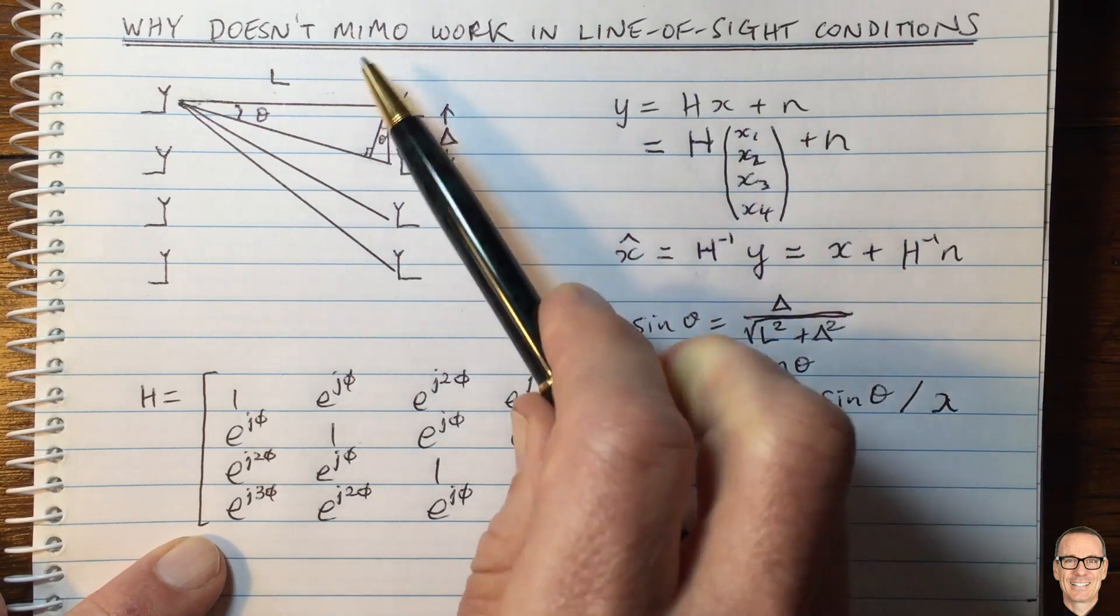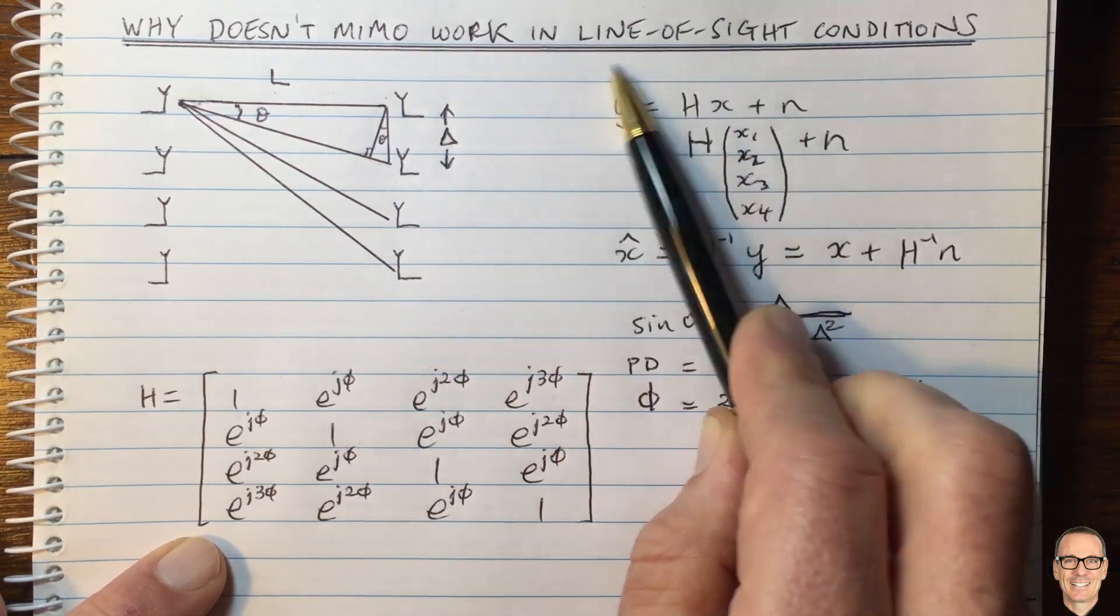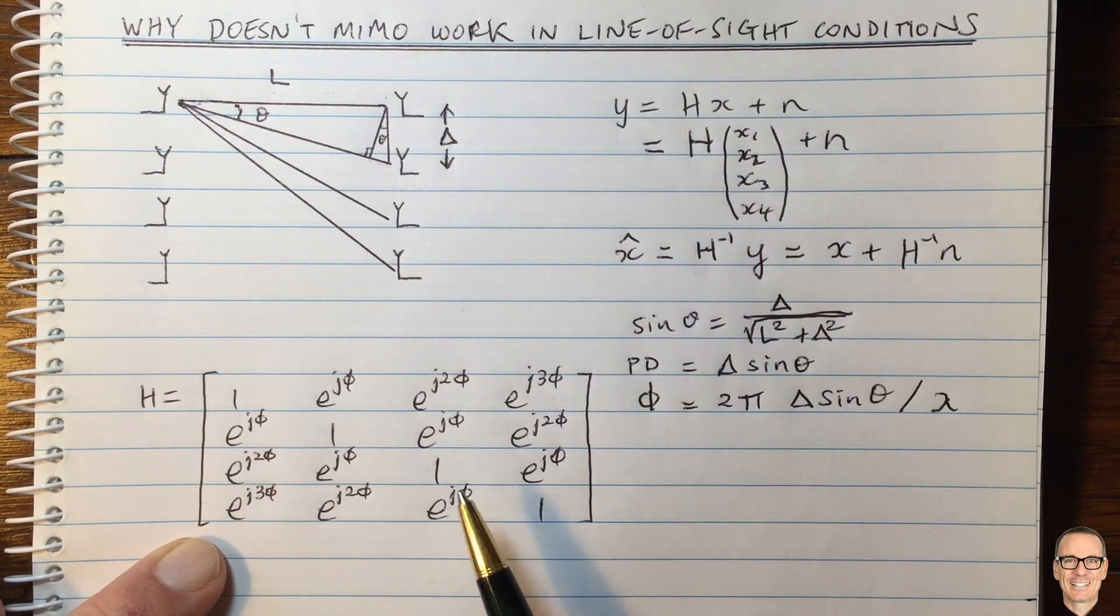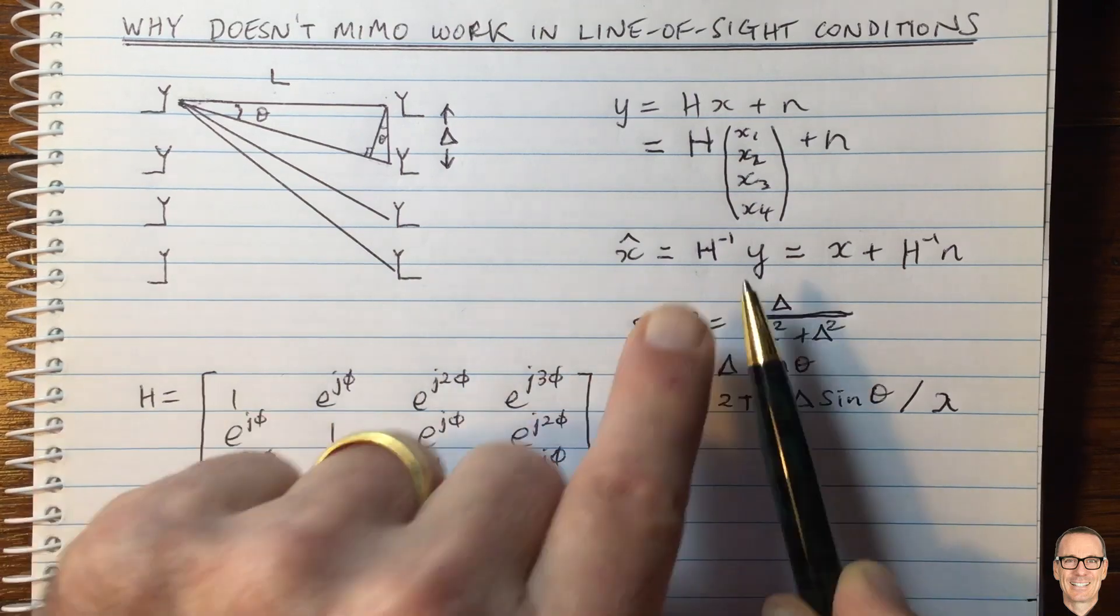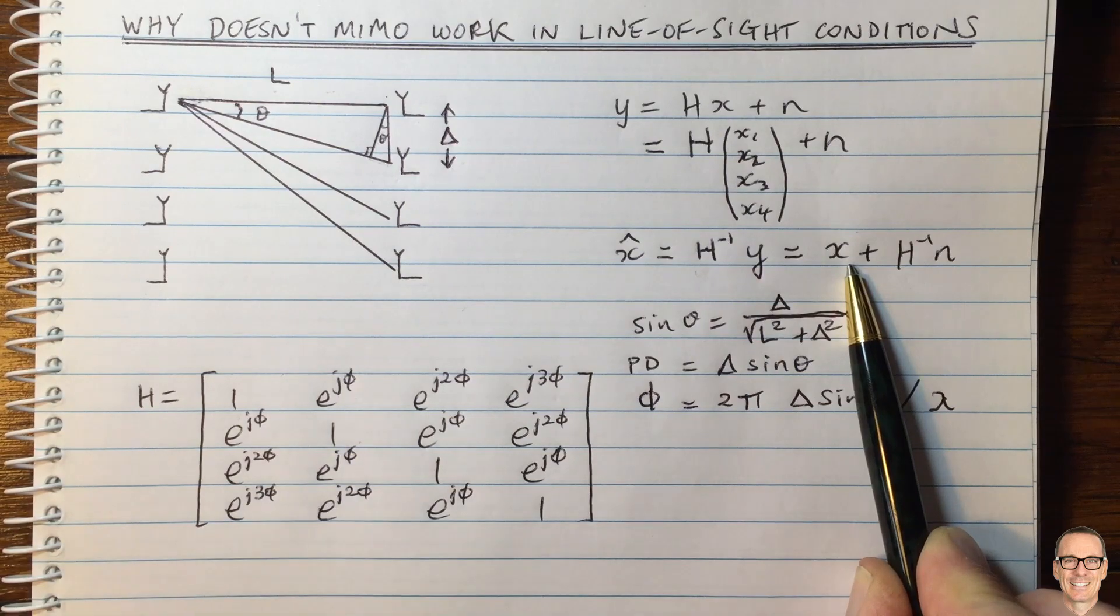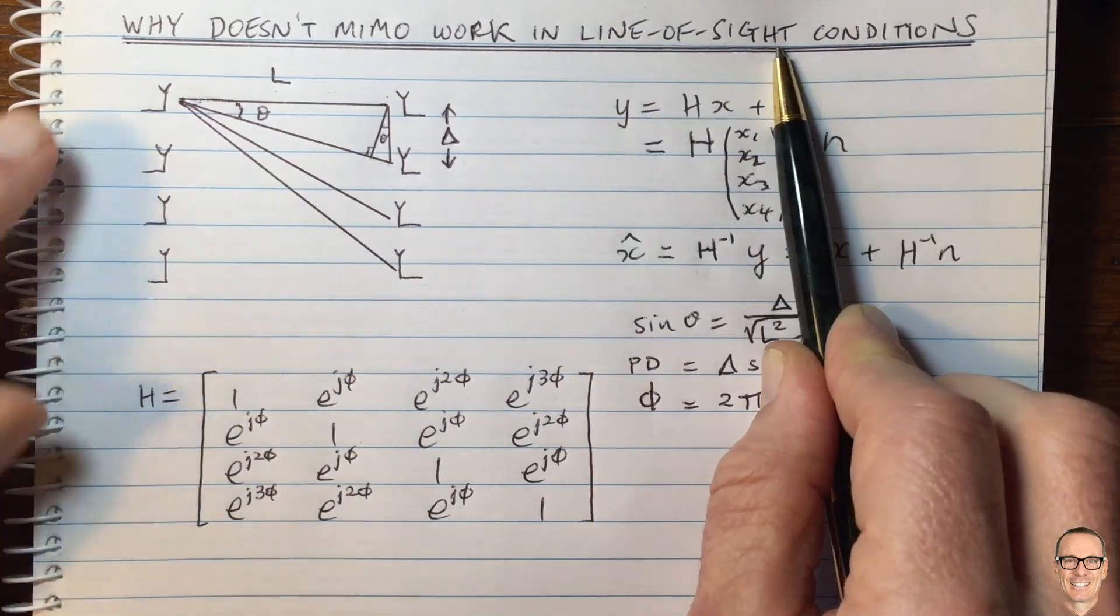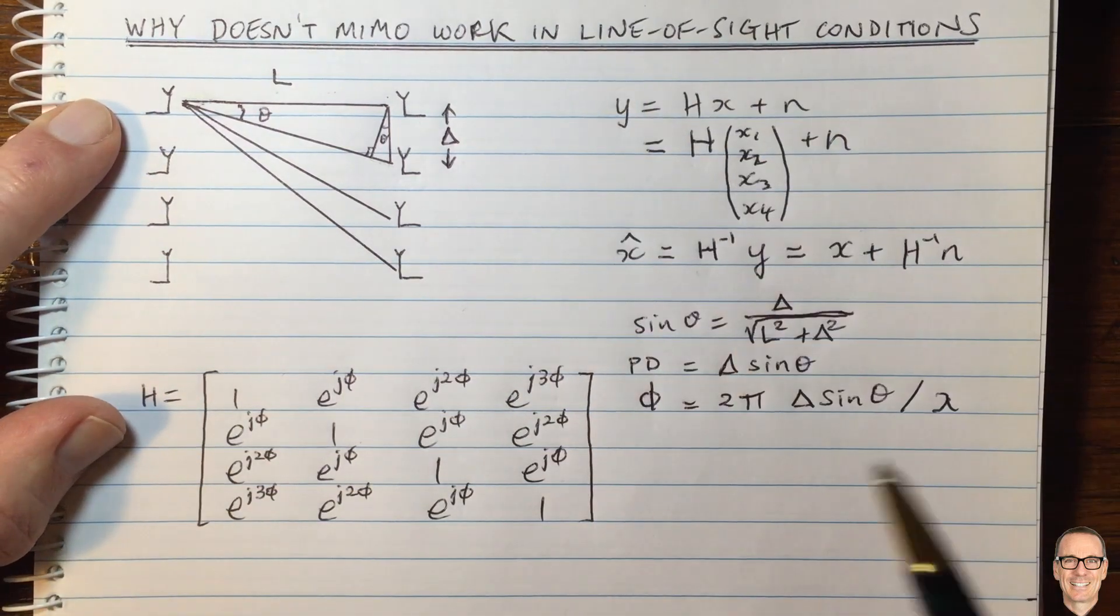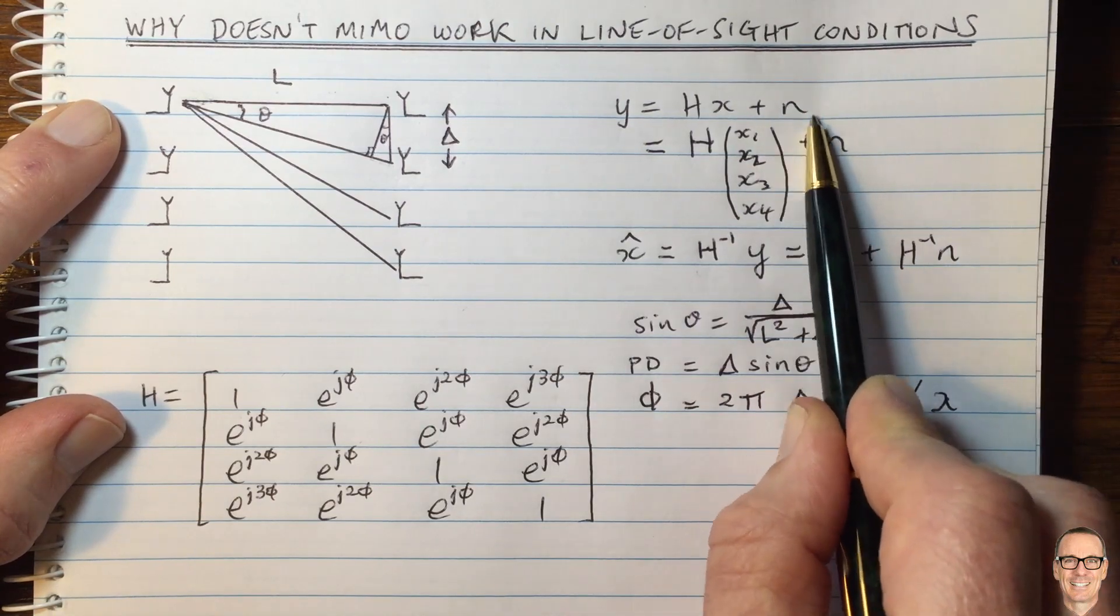This is an equation for the line of sight conditions. Actually you can invert this matrix. So it's not true to say that MIMO can't work in line of sight conditions because we can invert this matrix and we can do this to get an estimate of x. So what's going on? Why doesn't it work in line of sight in general?